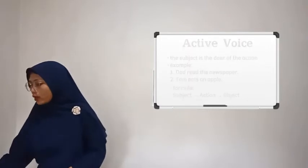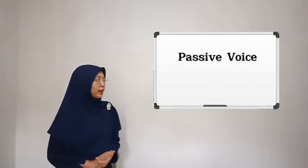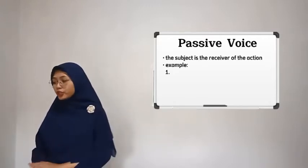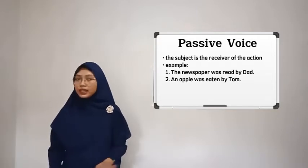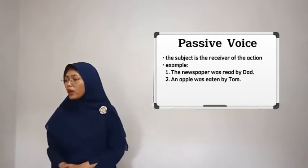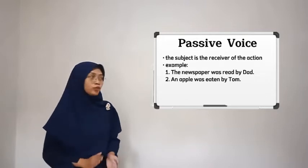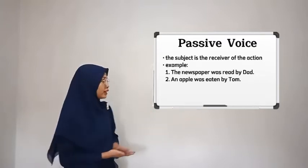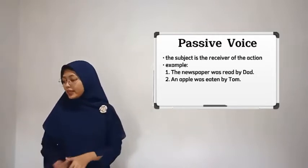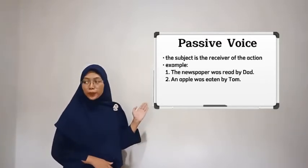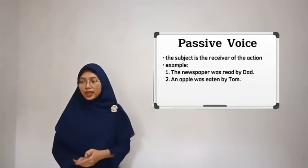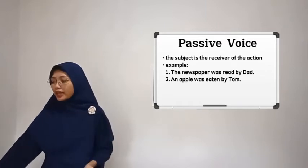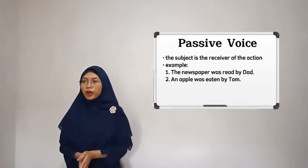Now let's move on to the second type of voice, which is passive voice. Passive voice is the opposite of active voice. In passive voice, the subject of the sentence is the receiver rather than the doer of the action. Here are two examples: 'The newspaper was read by Dad' and 'An apple was eaten by Tom.' In the first example, the newspaper is the one being emphasized instead of Dad. Similarly, in the second example, Tom is the subject but the apple is being emphasized.